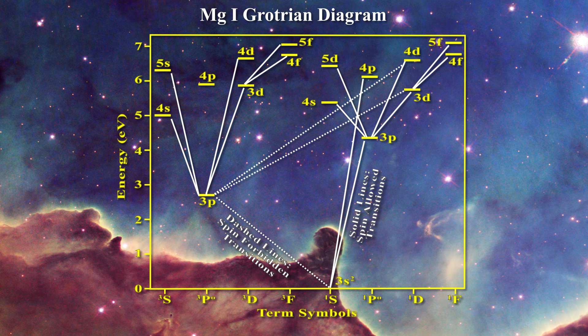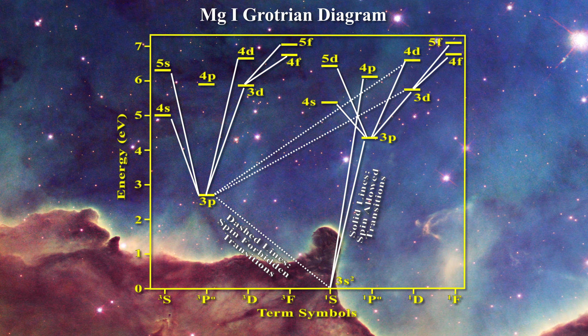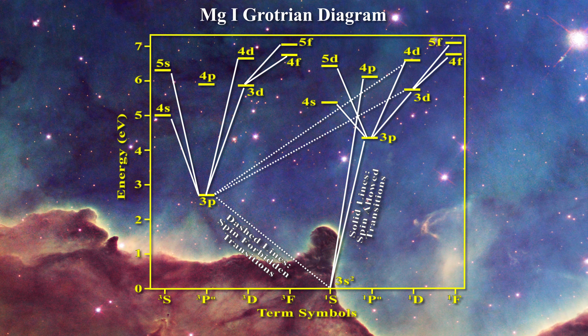In order to get a sense of the transitions possible for an individual atom, chemists have recourse to Grotrian diagrams. Here for instance is a Grotrian diagram for magnesium. On this diagram the position of the electronic orbitals is displayed relative to the ordinate axis on the left denoting the energy involved. The spacing between the energy levels gets closer and closer as higher orbitals are reached.